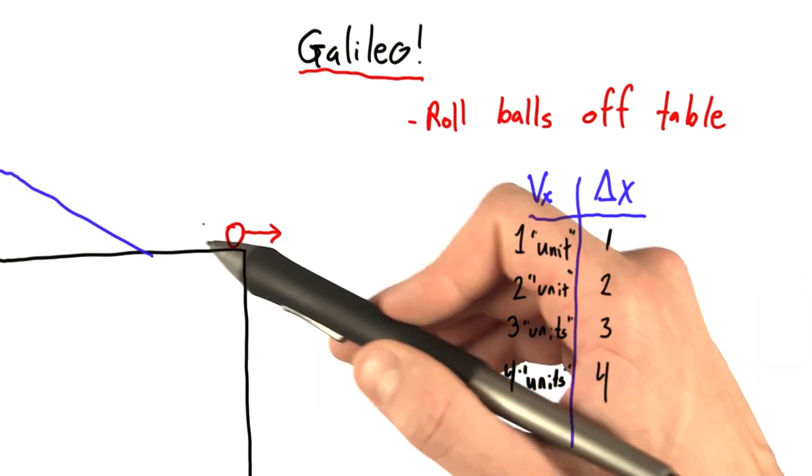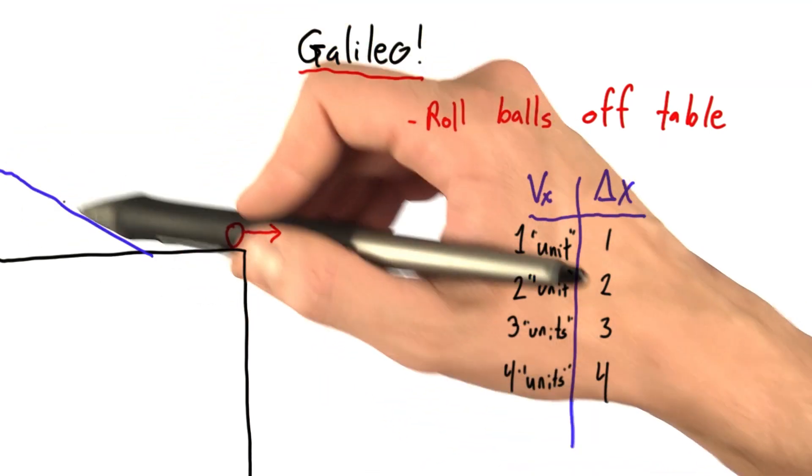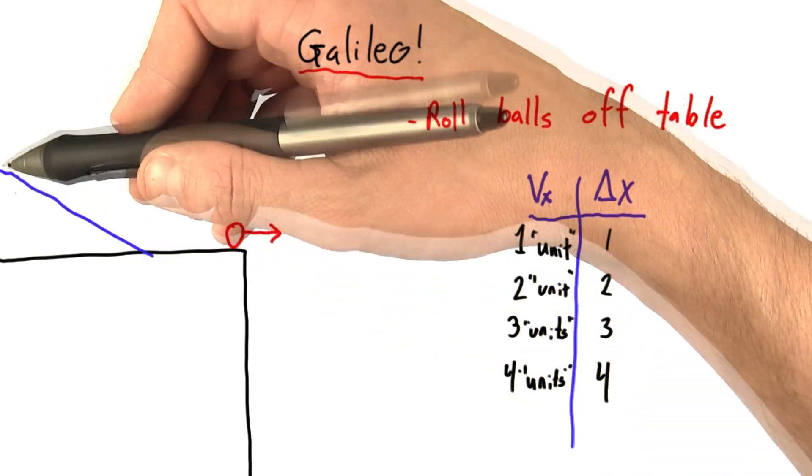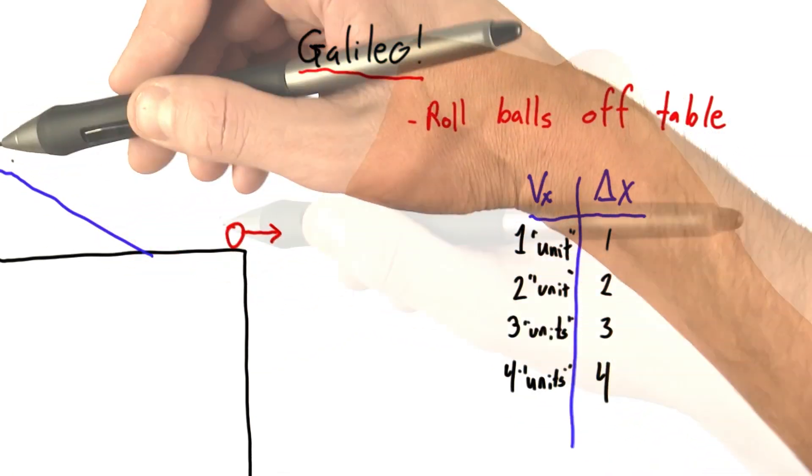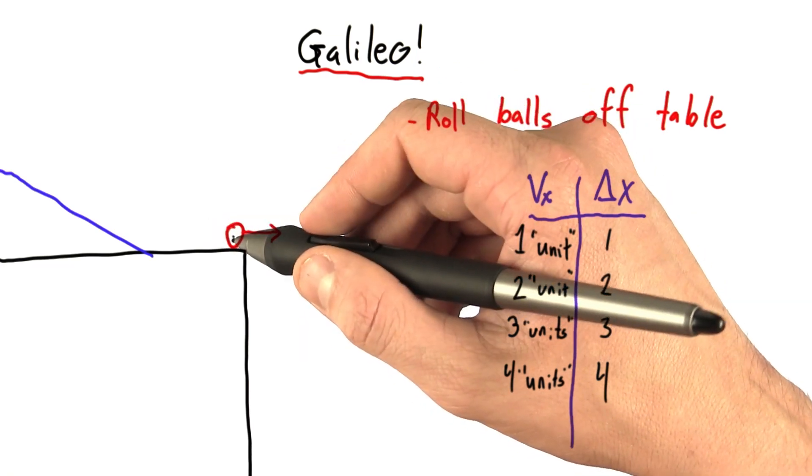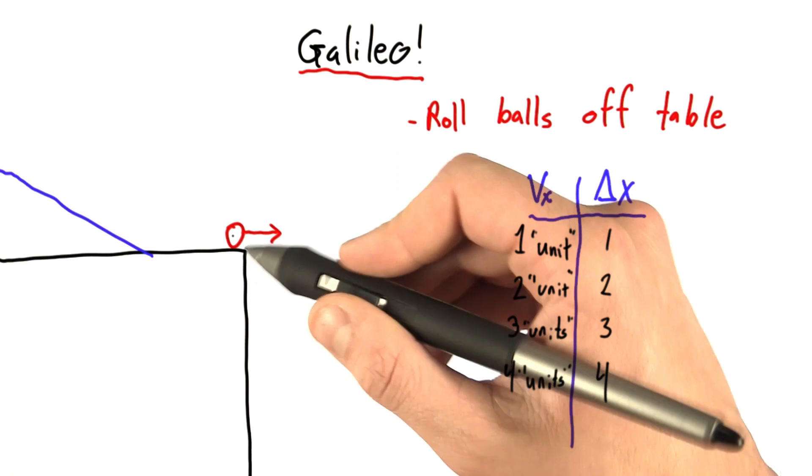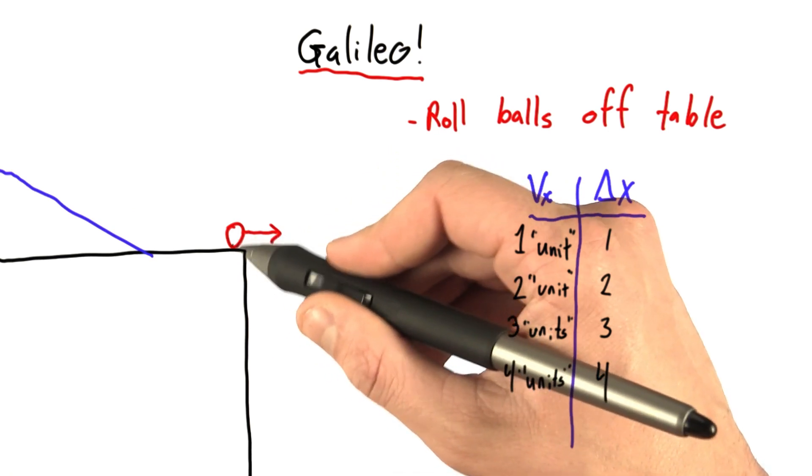Galileo controlled the speed of the ball by adjusting the height from which it rolled. So if he wanted to go faster, he would roll it from higher up. Higher up, of course, meant it would be going faster by the time it got to the edge of the table.